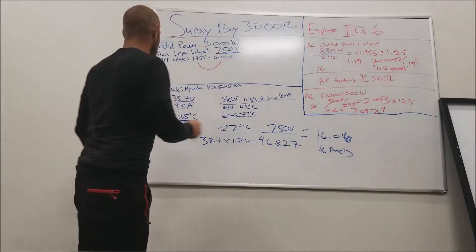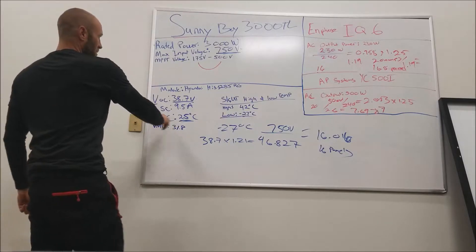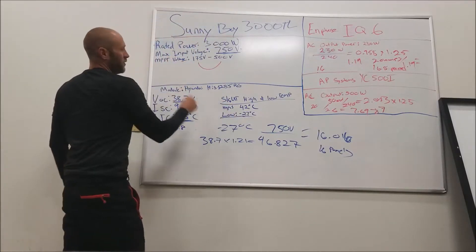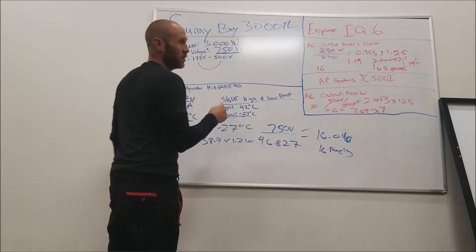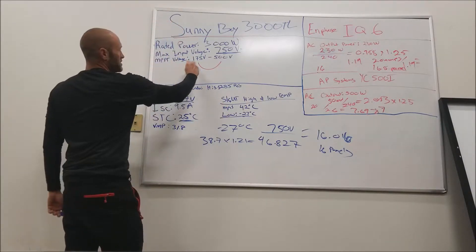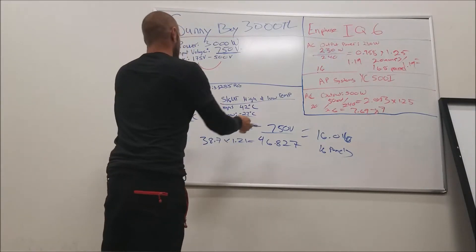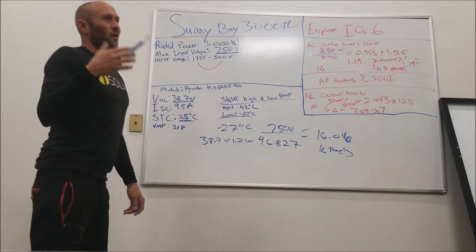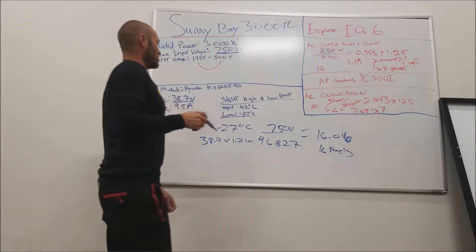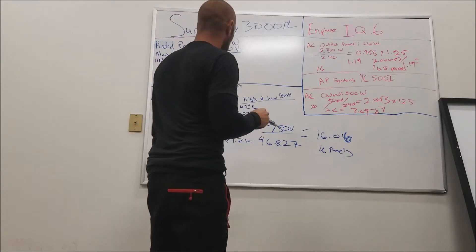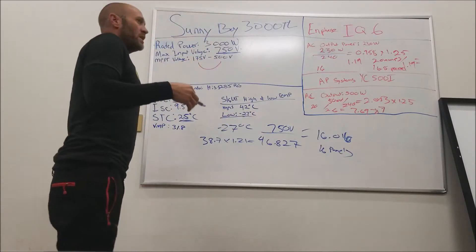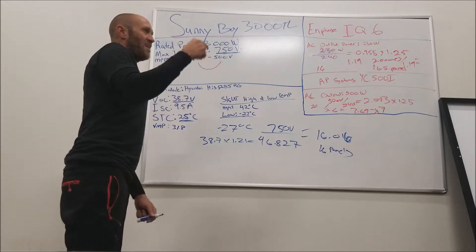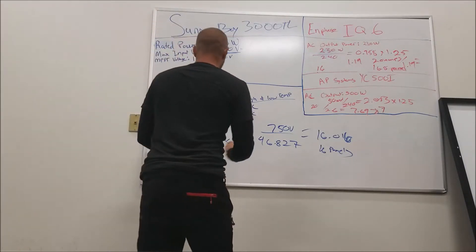If you're looking for efficiency, we're going to use our VMP. We're going to look for the minimum amount of panels we can put on this inverter, so we use 175 volts — the minimum MPPT voltage — and we'll also use the high temperature. We don't have a correction factor in the NEC code book for this, so a good way to do that is to use a 0.005 percentage.